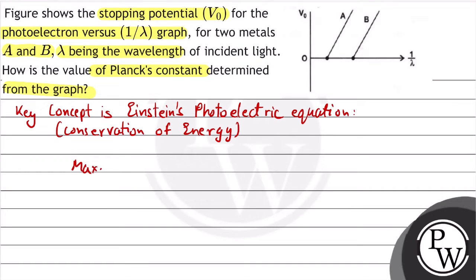Maximum kinetic energy of photoelectron is equal to energy of photon minus the work function of metal.